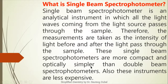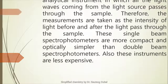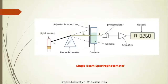These single beam spectrophotometers are more compact and optically simpler than double beam spectrophotometers. This device is comparatively simpler and also less expensive than the double beam spectrophotometer. Here is the schematic diagram — you can see the light source generating light, going to the monochromator, making the light monochromatic, and passing directly to the sample cuvette.